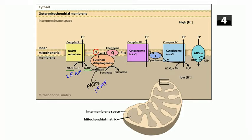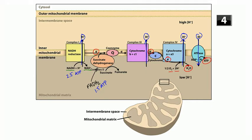Complex III includes cytochrome B and cytochrome C1, which passes the electron to cytochrome C. Complex IV is cytochrome A and A3 — at the end, you donate the electron to oxygen and hydrogen ions to create water. Throughout the chain, hydrogen ions are pumped into the intermembrane space against their concentration gradient. They then come back in via ATPase, which uses that electrochemical gradient to generate ATP.